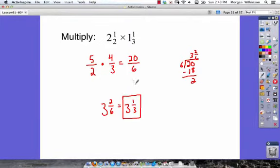We've got our final answer. We went through that process of changing our mixed numbers to improper fractions, multiplying, and then simplifying down to our product of 3 and 1 third.